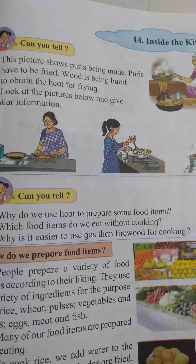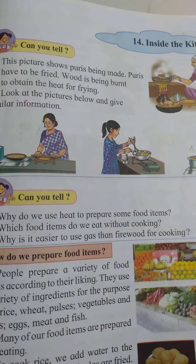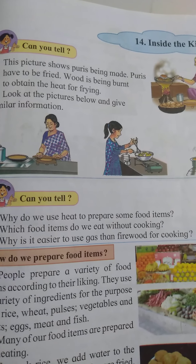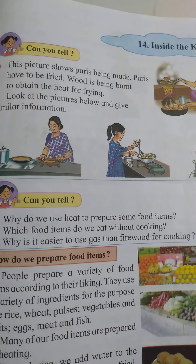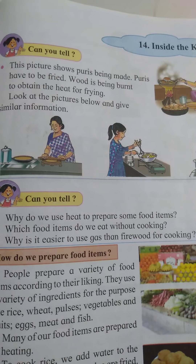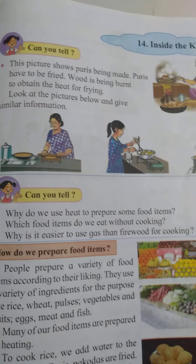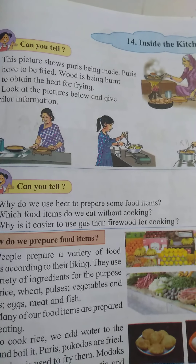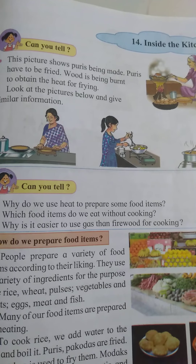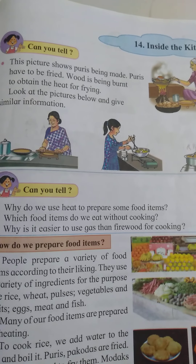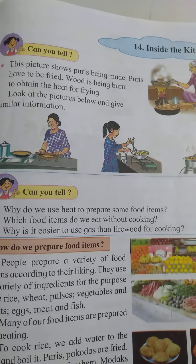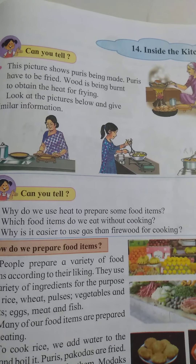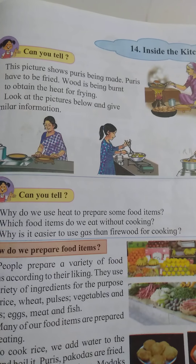Children, cooking is a process of preparing food by applying heat. Why do we cook food? We cook food so that it becomes soft, kills germs and makes it easy to digest.